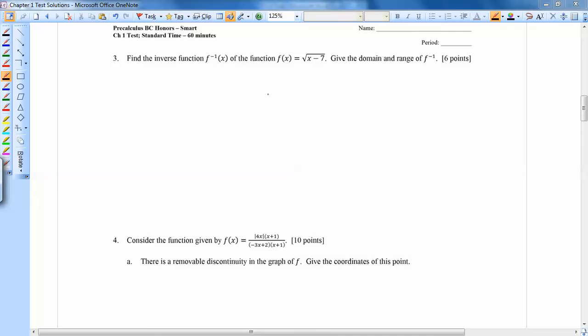So most people can find the inverse fine, but we're not doing the right things with domain and range. So if we look at the original, I'm going to write it as y equals x minus 7 underneath the root.